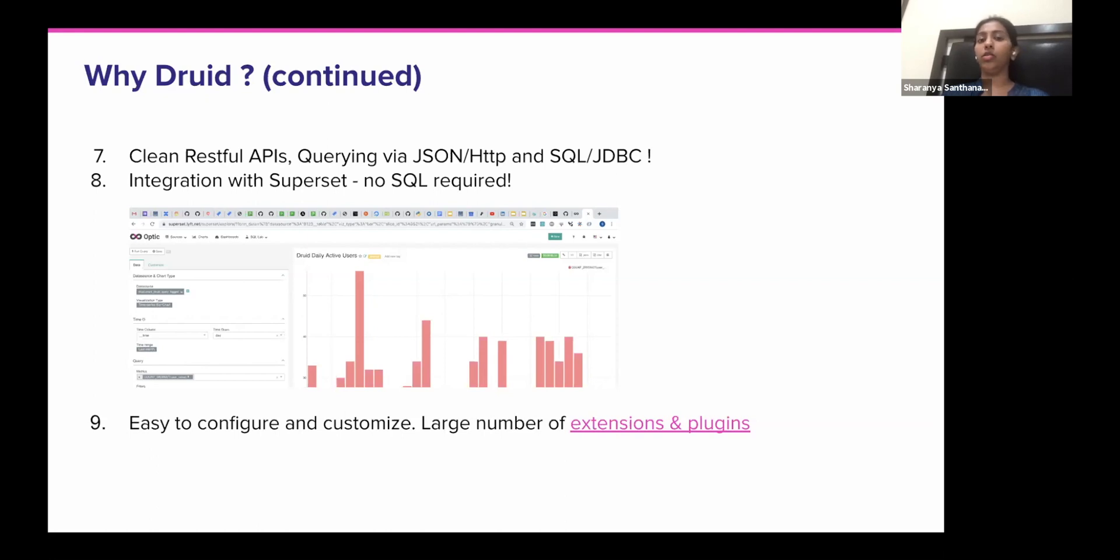It's easy to write your queries in a JSON format over HTTP, or it also supports SQL and JDBC. Another nice thing about it is it integrates very well with Superset. So we use Superset quite heavily at Lyft. It's really popular, especially with users who do not want to write SQL queries. They can just easily do drag and drops and start visualizing all of the data that's coming in from Druid.